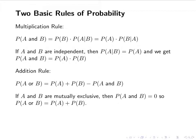If A and B are mutually exclusive, then by definition the probability of A and B is zero. So we just get the probability of A or B equals the probability of A plus the probability of B. Remember, this is only true if A and B are mutually exclusive.